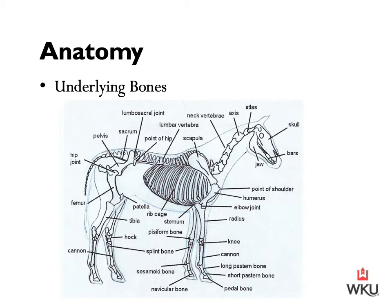The skeletal system of the horse has three major functions: to protect the vital organs, provide framework, and support the soft parts of the horse's body. The length of the bones and the angles at which they come together determine the horse's conformation, their way of going, their length of stride, and their athletic potential. Keep in mind that the length of these bones and the angles that they come together are going to help determine conformation as we talk about that in our next lecture.